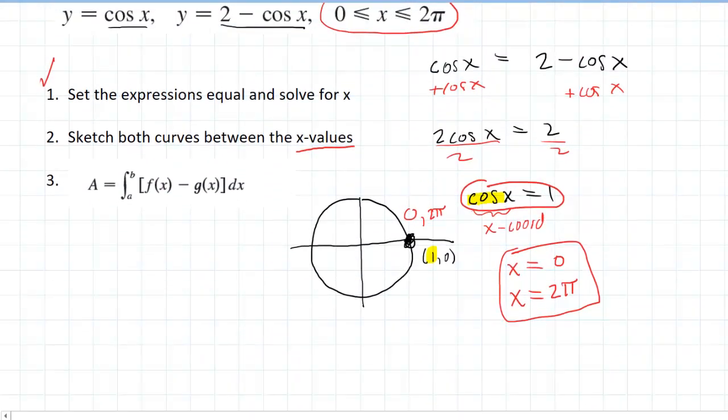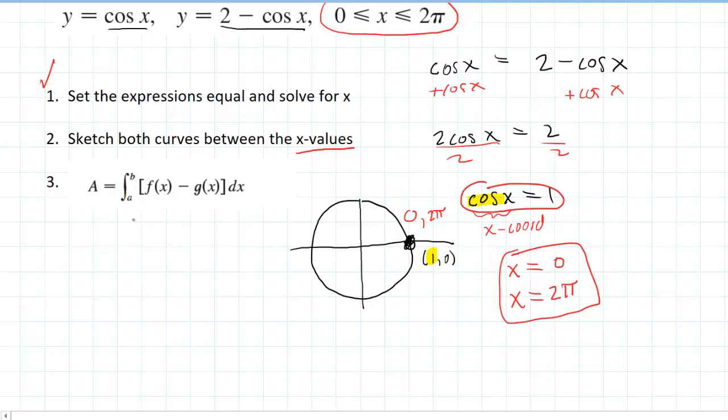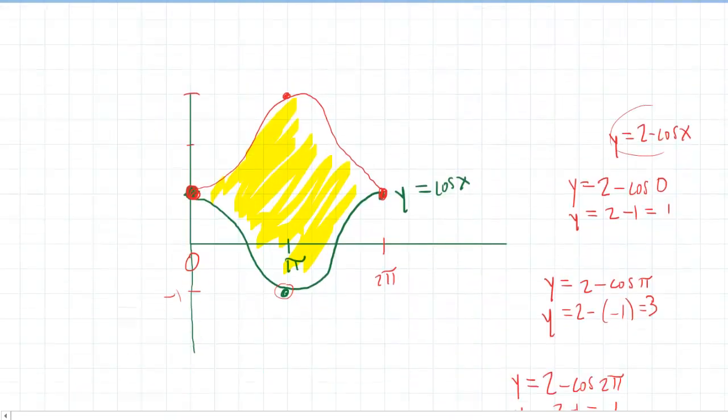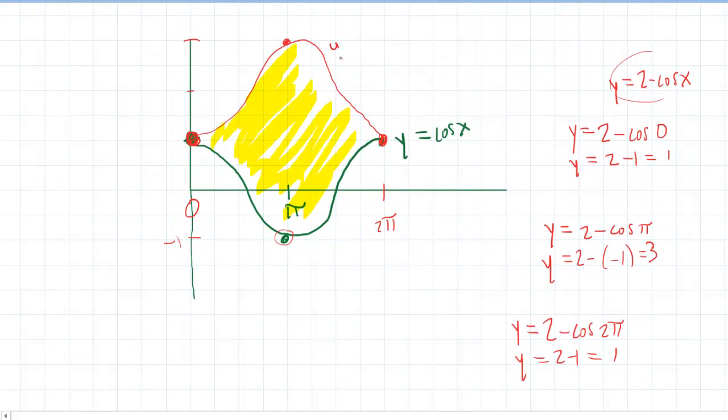We go back up. And it says the area is equal to an integral from a to b of f(x) minus g(x). Now, a and b are easy. Those are my lower x value and my upper x value, respectively. As for f(x) and g(x), I like to keep in mind that f(x) is going to be my top function. And then g(x) is going to be the bottom function. So it's basically top minus bottom. You go back to the curves down here. The top function in red was y equals 2 minus cos x. And then the bottom function was just y equals cos x.